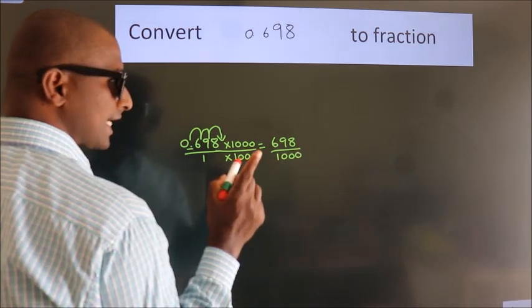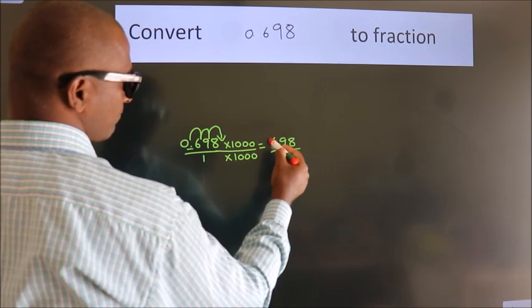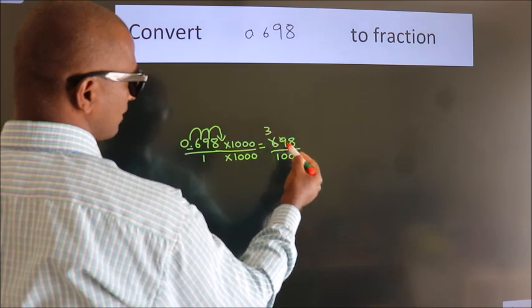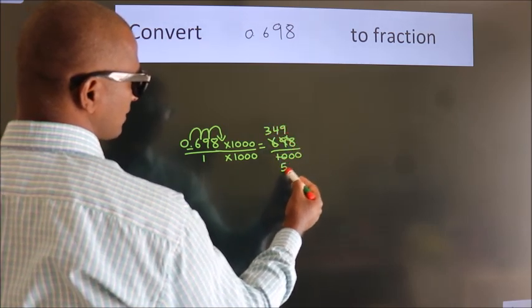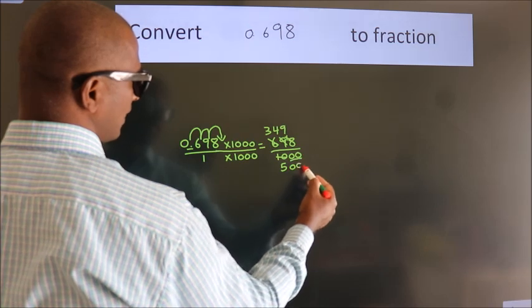Now I cancel with 2. 2 threes, 2 fours, 2 nines, 2 fives. These zeros as is down.